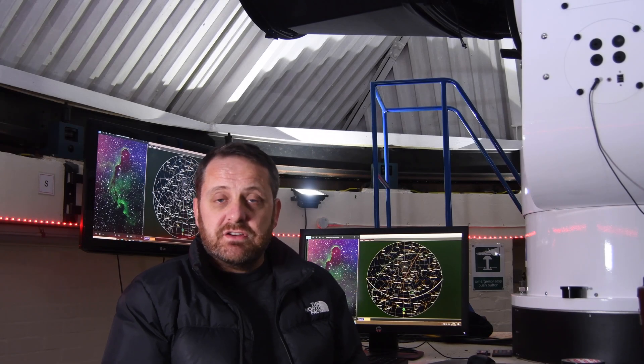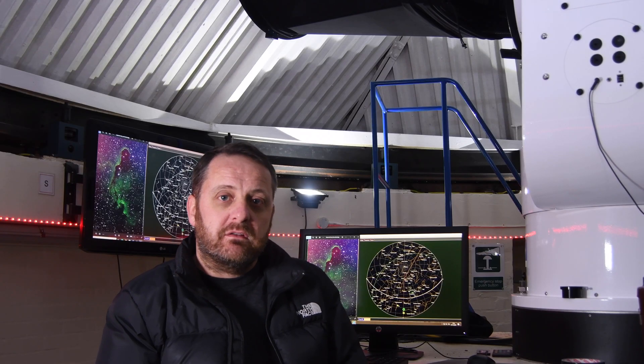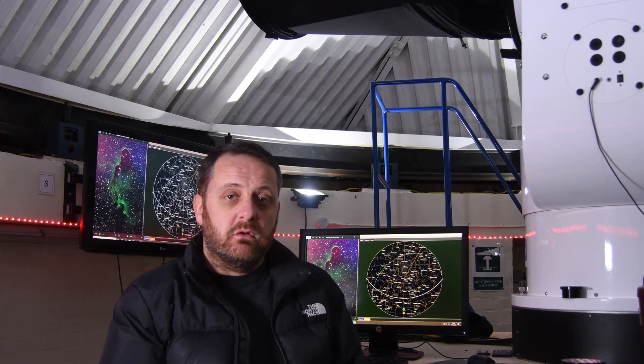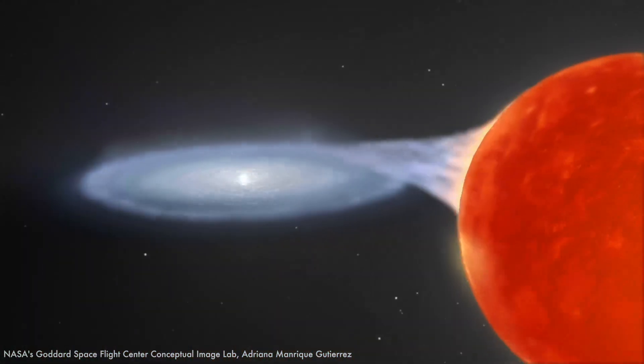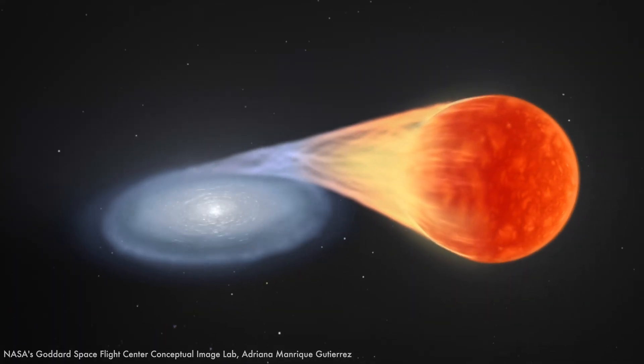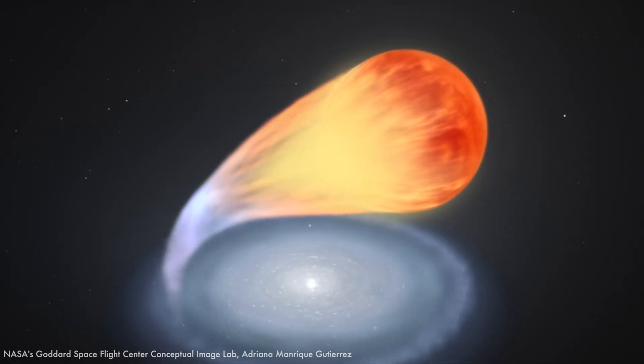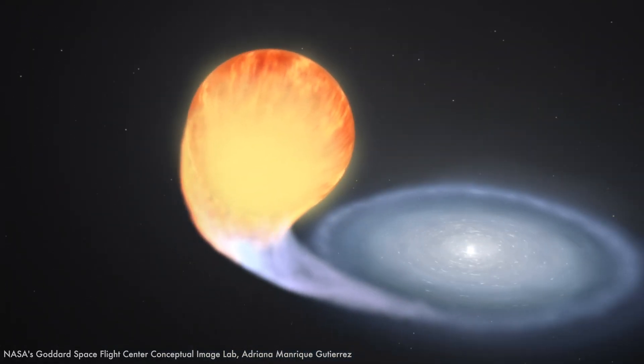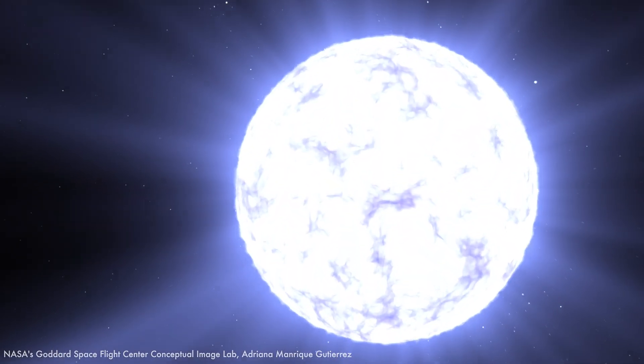Now, the fortunate thing is that nature has given us a clock that we can observe at cosmological distances. So we can actually measure whether or not time appears to slow down or speed up. Type 1a supernovae are that clock. Type 1a supernovae are runaway fusion explosions, essentially giant fusion bombs occurring in white dwarfs, which are the exposed cores of dead stars.